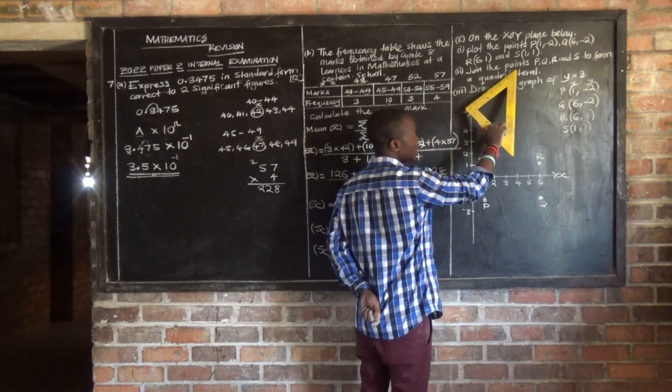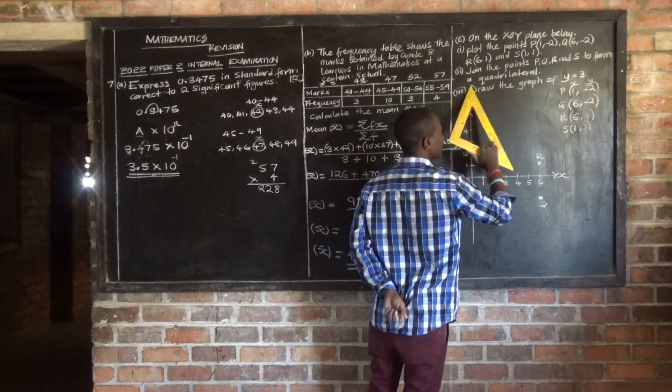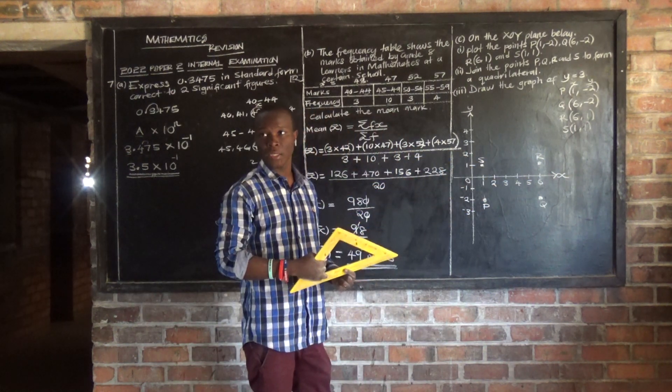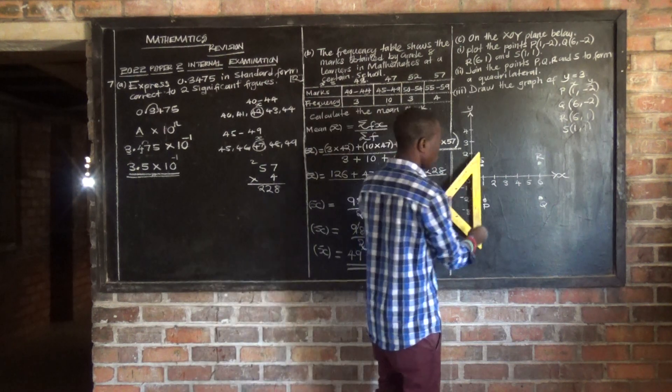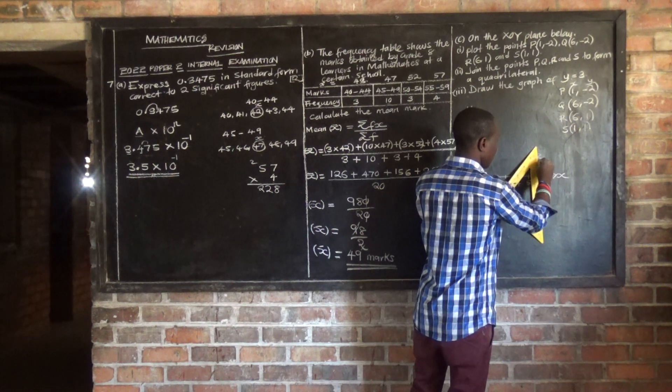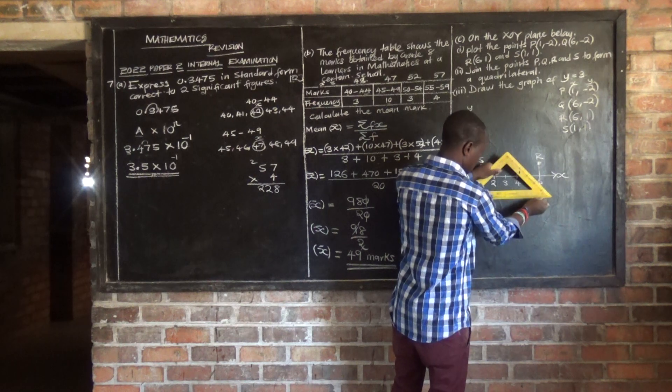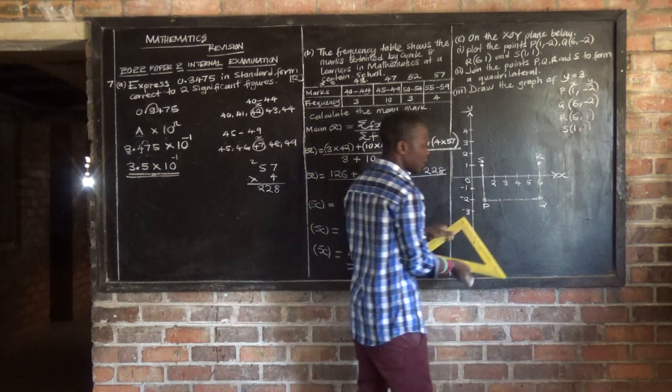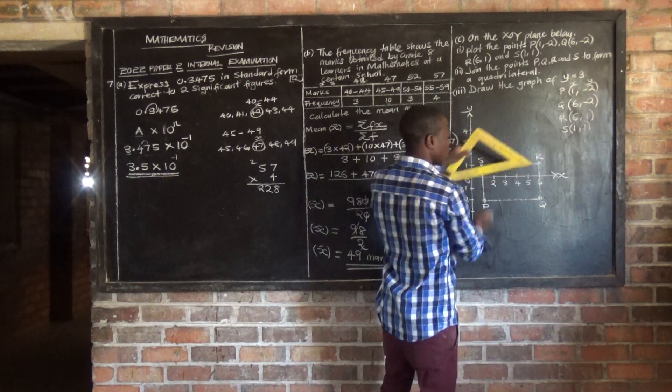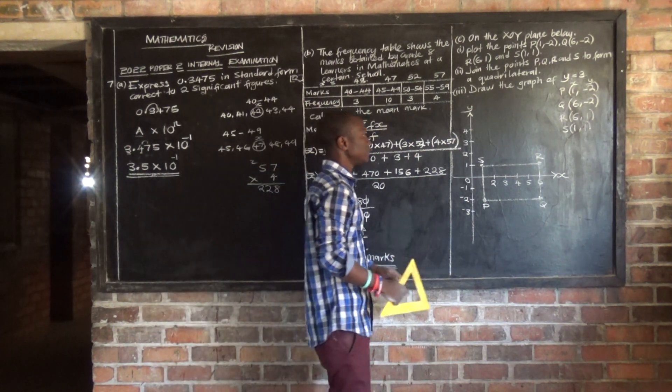Now the other question says join the points P, Q, R, and S to form a quadrilateral. You know a quadrilateral is a four-sided polygon. They want us to join the points. Let's join P to S, then R to Q, then R to S. We are done, we've joined. This is it.